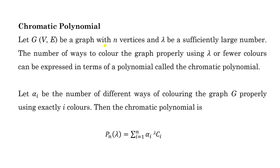In this lecture we will discuss chromatic polynomial. Let G(V) be a graph with n vertices, and suppose lambda is a sufficiently large number — you can assume lambda is greater than or equal to n. The number of ways to color the graph properly using lambda or fewer colors can be expressed in terms of a polynomial called the chromatic polynomial.